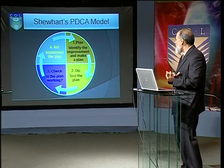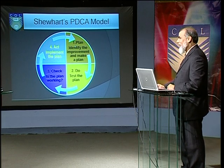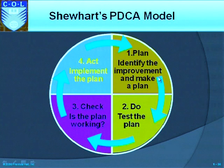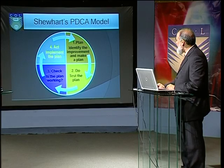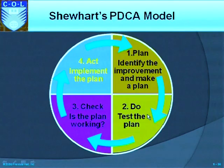Shewhart's PDCA model drives continuous improvement. The cycle says: Plan — identify the improvement and make a plan; Do — test the plan; Check — is the plan working?; Act — implement the plan. This circle indicates an ongoing, never-ending process of continuous improvement that repeats continuously.